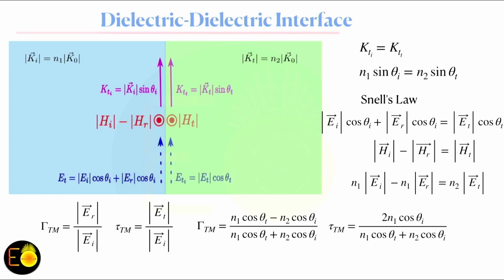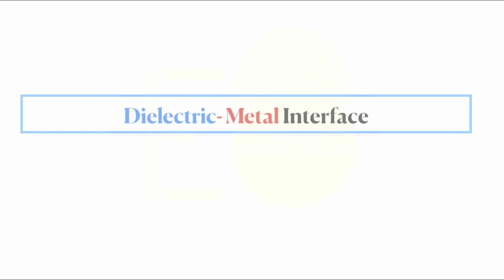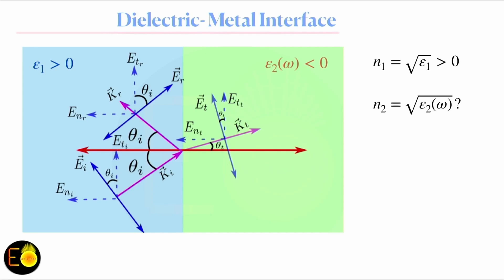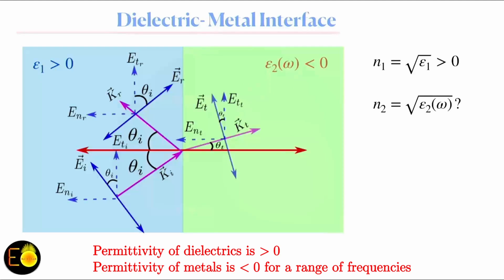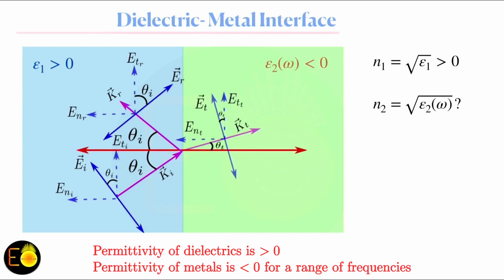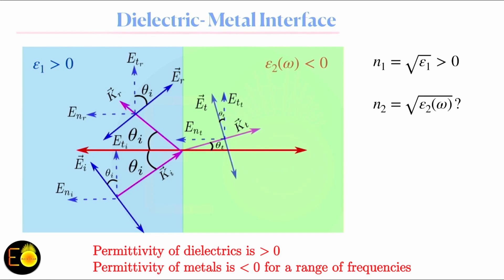I am now going to give a brief introduction to the dielectric-metal interface, which is the fundamental building block of SPR or surface plasmon resonance. The same diagram is copied from the dielectric-dielectric case, but now the second medium is a metal — because epsilon2, the permittivity of the second medium, is negative for a certain range of frequencies, and is frequency dependent. The dielectric medium is generally frequency independent with permittivity greater than 1. N1 equals the square root of epsilon1, which is greater than 1.